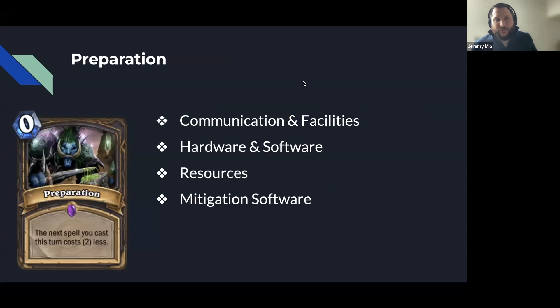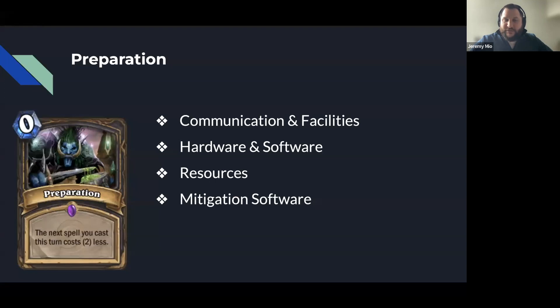A lot of resources should be spent on preparation, making sure that your entire incident framework and incident response capabilities are thought out and planned ahead of time. This can include communications, facilities — having redundant or alternate facilities is becoming less needed depending on the situation, especially because of remote work and virtualization. Alternate facilities are still good for a lot of business practices, such as handing out equipment, which was big during COVID.